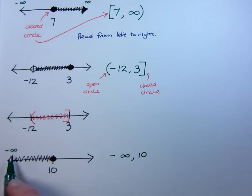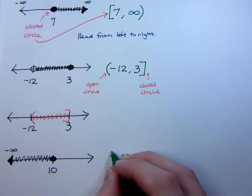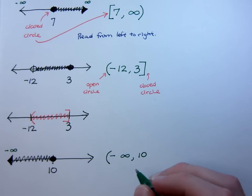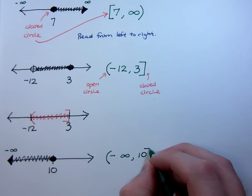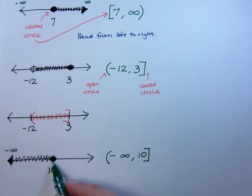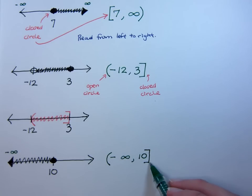We always use parentheses for infinity because you can never include that, you can never get there and grab it and hold on to it, but 10 is one of those numbers you get to stop at and include. It's colored in, it's filled in, closed circle, so that's going to tell us that we will have a bracket over here.